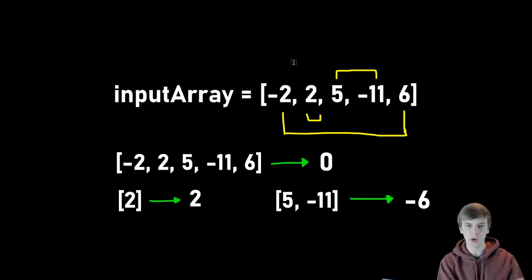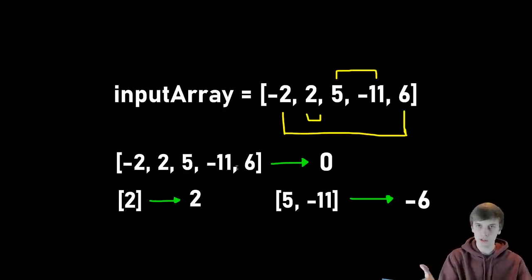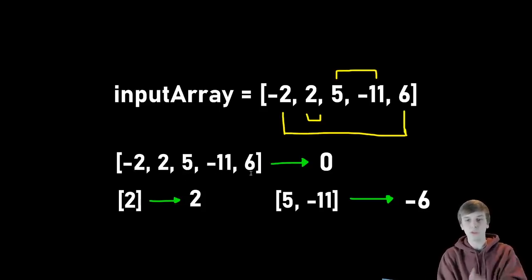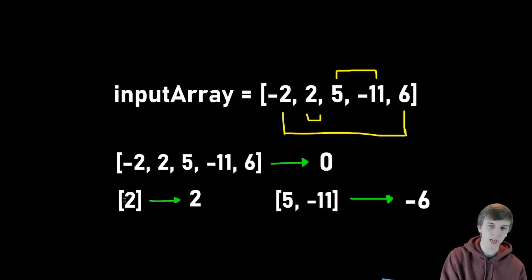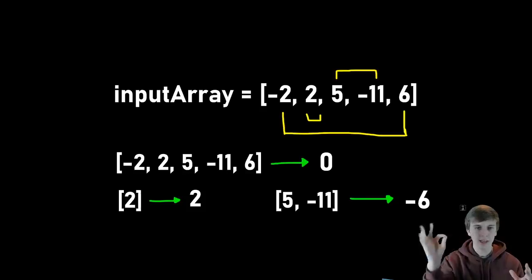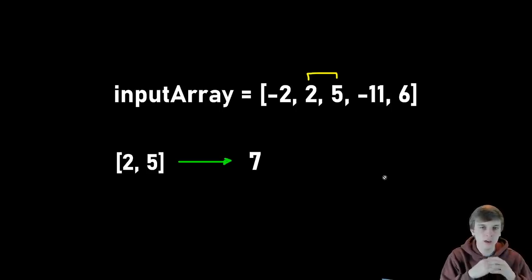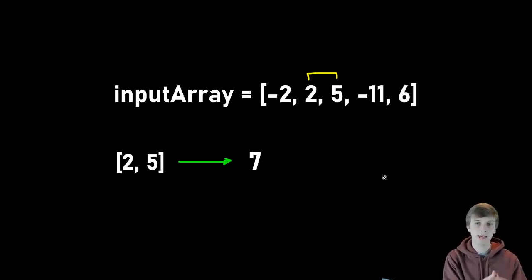So contiguous subarray — there's a bunch of them in this array. The sum of the contiguous subarray is just the sum of all of the elements. The sum of subarray containing just two is two. The sum of the whole array, which is a contiguous subarray, is negative two plus two plus five plus negative 11 plus six — that's zero. So two already has a better sum than the whole array. Five and negative 11 is negative six. The maximum contiguous subarray is actually just elements two, five — two plus five is seven. That is greater than all other contiguous subarray sums, so this is the max contiguous subarray sum.